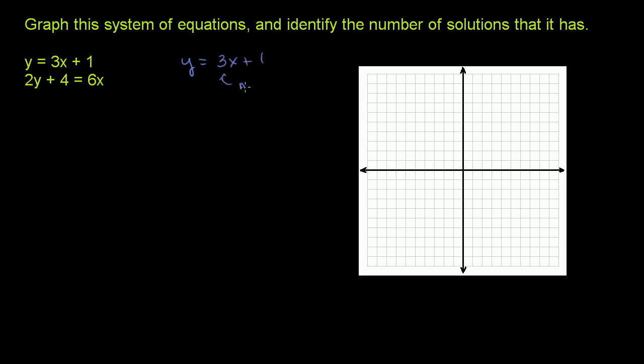The first equation here, I'll rewrite it. So I'll graph it in the same color that I write it. This first equation is already in slope-intercept form. y is equal to 3x plus 1. We see that the slope, or m, is equal to 3. And we see that the y-intercept here is equal to 1. That is also the slope. I just called it m because a lot of times people say y is equal to mx plus b.